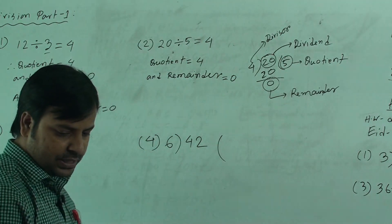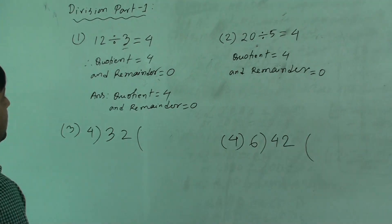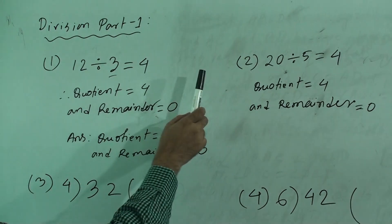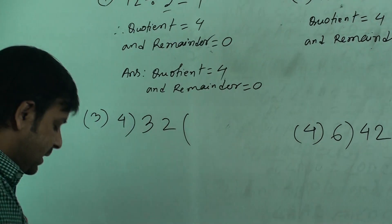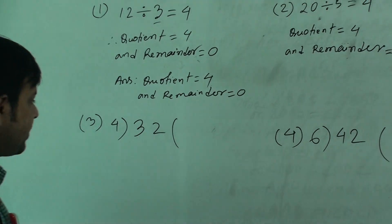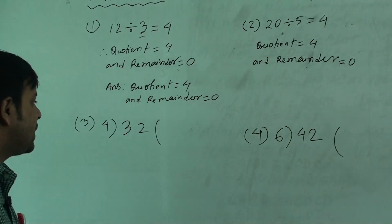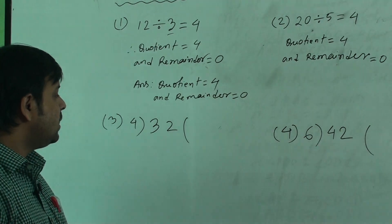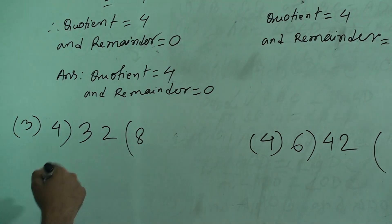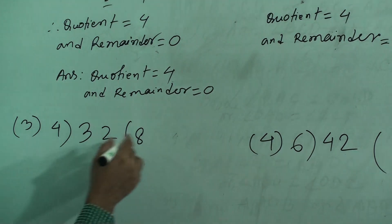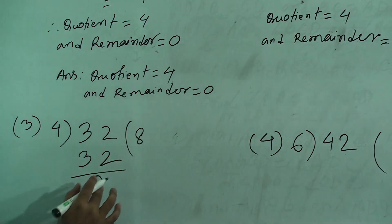These two divisions are known as horizontal division. Now I will show you the vertical division. We divide by 4, so 4 is the divisor. We have to say the times table of 4: 4 0s are 0, 4 1s are 4, 4 2s are 8, 4 3s are 12, 4 4s are 16, 4 5s are 20, 4 6s are 24, 4 7s are 28, 4 8s are 32. So, 4 8s are 32. We can write 0. This is our quotient, and this is our remainder.